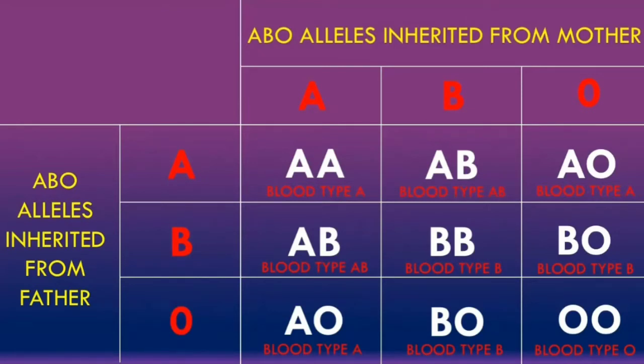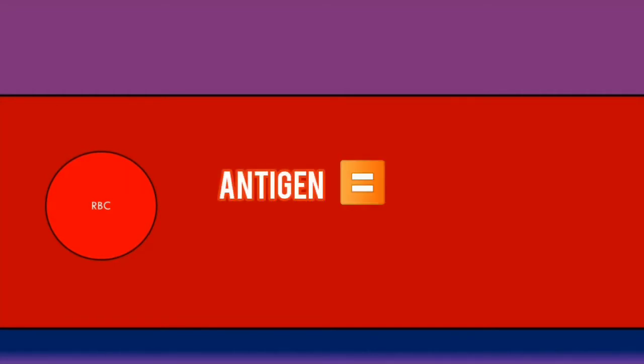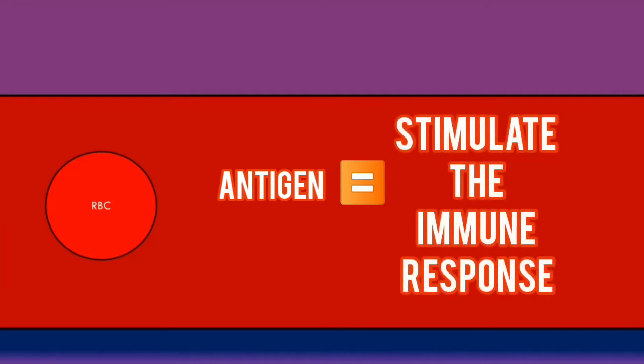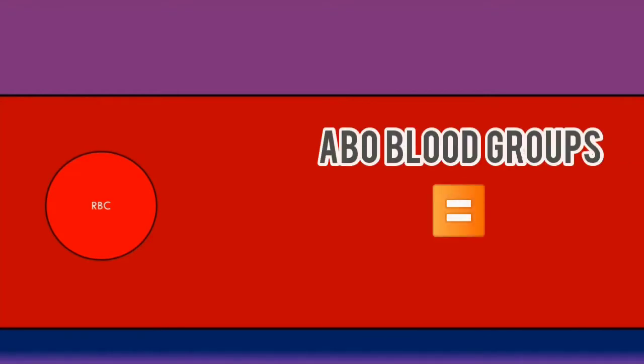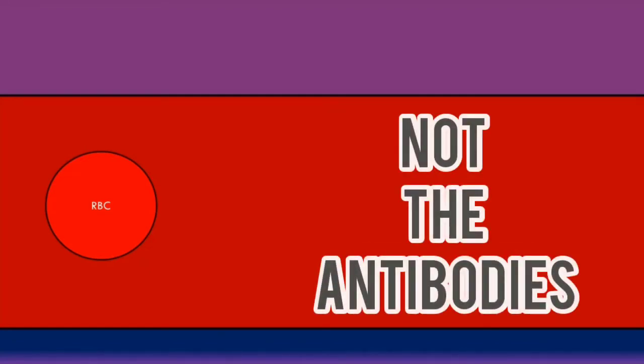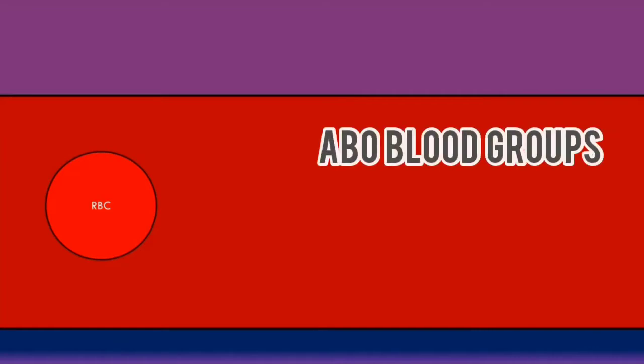Let's now go into what each different ABO blood type represents in a person's blood. Here we have the bloodstream and a red blood cell. A key definition to remember is that an antigen is a substance which can stimulate the immune response, particularly the production of antibodies. A key point to never forget is that each of the ABO blood groups refers to the specific antigens on the surface of the red blood cells, not the antibodies in the plasma of the blood.